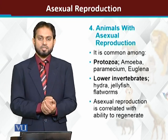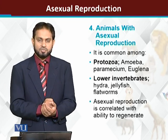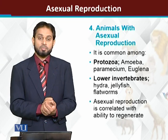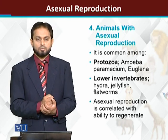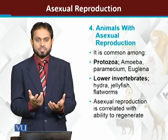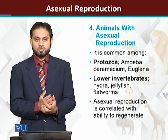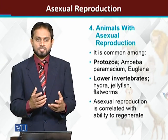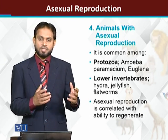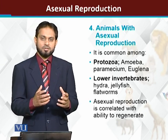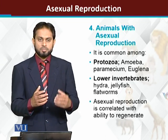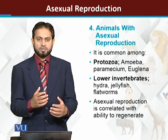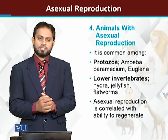Lower invertebrates — hydra, jellyfish, obelia, planaria, starfish, and tapeworms — are different types of animals that have reproductive potential for asexual reproduction. These invertebrates do reproduce asexually.